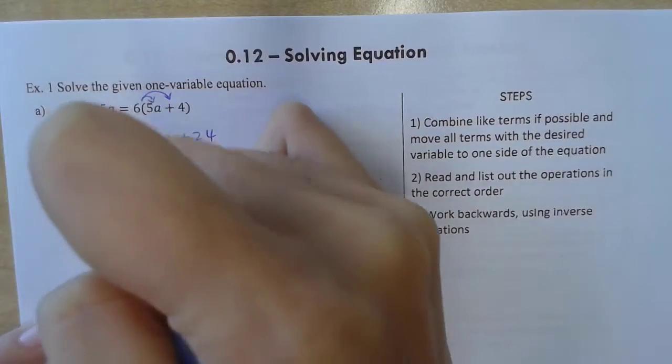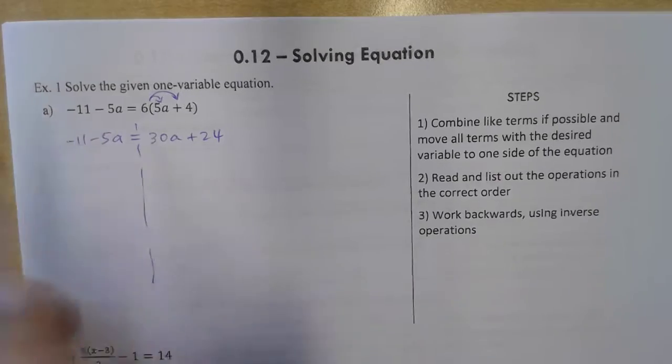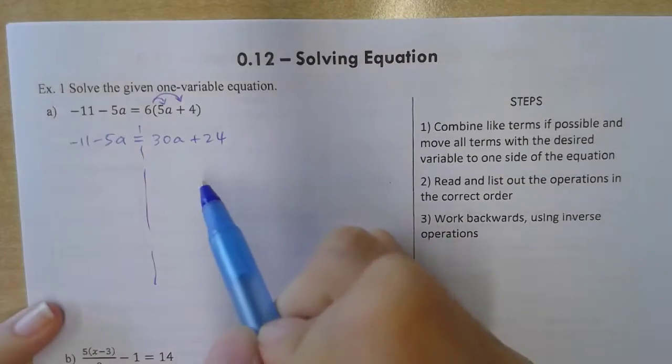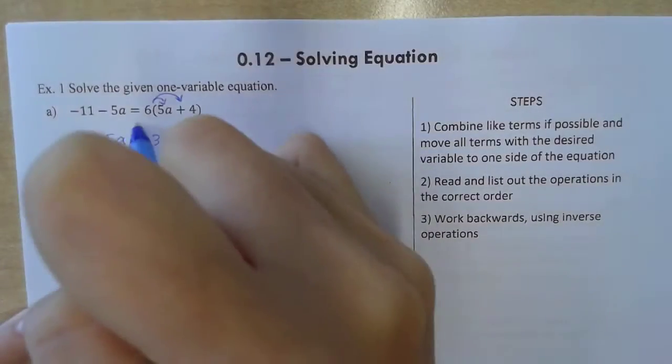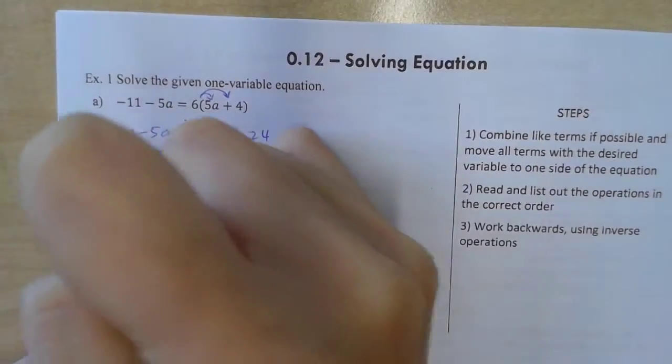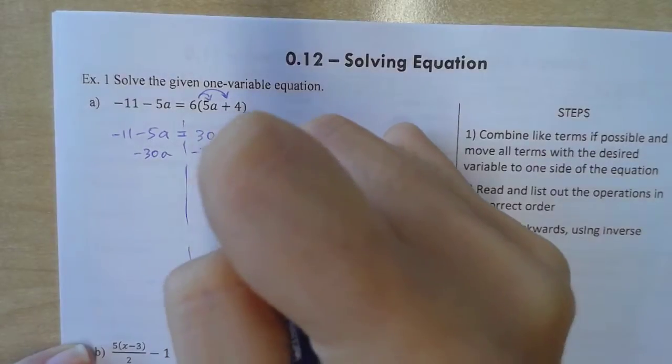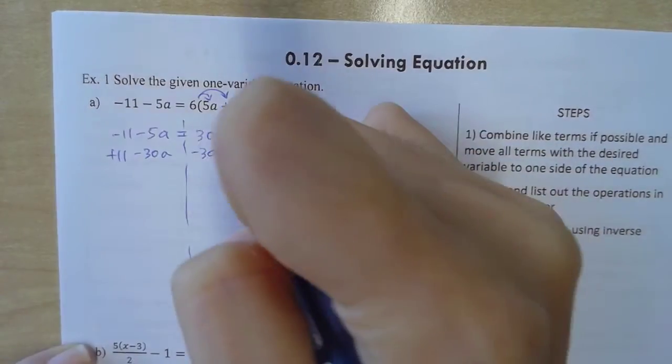All right. Now, I'm gonna move all the terms with a to one side. So I actually personally prefer putting the variables on to the left side. So I'm gonna actually just divvy up the equal sign and subtract 38 both sides. And you guys, I'm gonna actually take some shortcuts. Oh, bug it. That's not what I wanted to do.